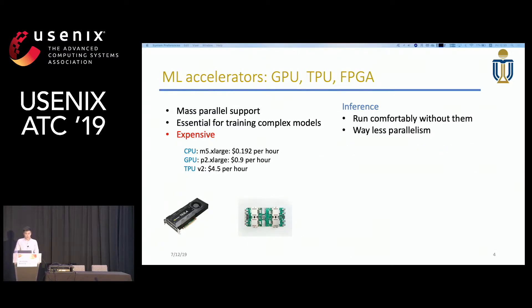Another unique property of machine learning serving is that it has many expensive hardware accelerators available on cloud. Unlike training, these accelerators are not essential for serving as there is way less parallel computation involved, and CPUs can handle that very comfortably. So if we were to use these accelerators, we need to group multiple requests into one batch to increase parallelism. Besides taking advantage of high parallelism optimizations built into these accelerators, batching also amortizes overheads like RPC calls and cross-device memory copy. The question remains: how do we choose between CPUs and accelerators, and what's the cost and latency impact?